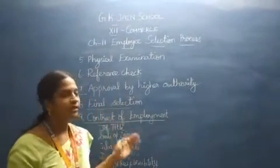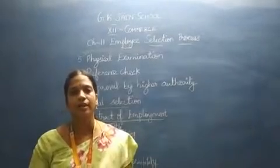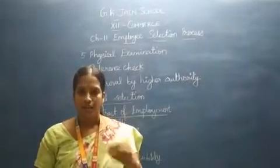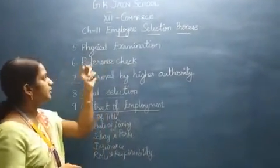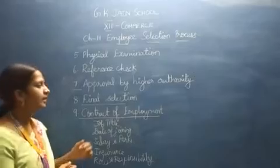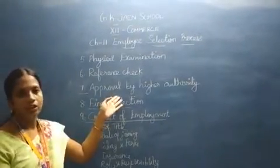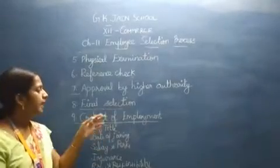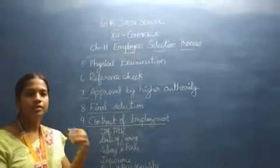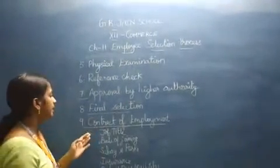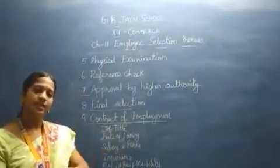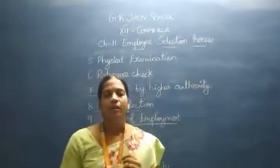To summarize, the selection process begins with the application blank, then scrutinizing, then the selection test, then interviews. In today's class we saw the physical examination, reference checking, approval by the higher authority, final selection — where rules and responsibilities are told orally — and finally the contract of employment, where all details are documented and signed by both the organization and the candidate.